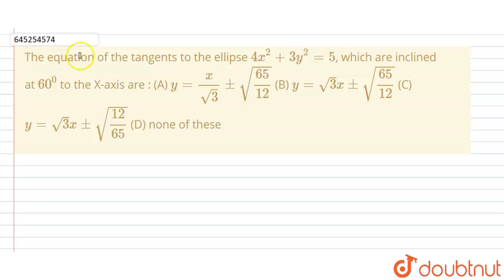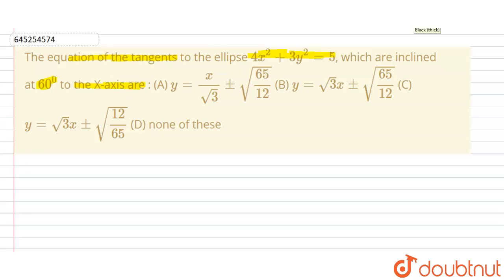The question is: find the equation of the tangent to the ellipse 4x² + 3y² = 5 which are inclined at 60 degrees to the x-axis. In this question, we need to find the equation of the tangent, given that it is inclined at 60 degrees to the x-axis.